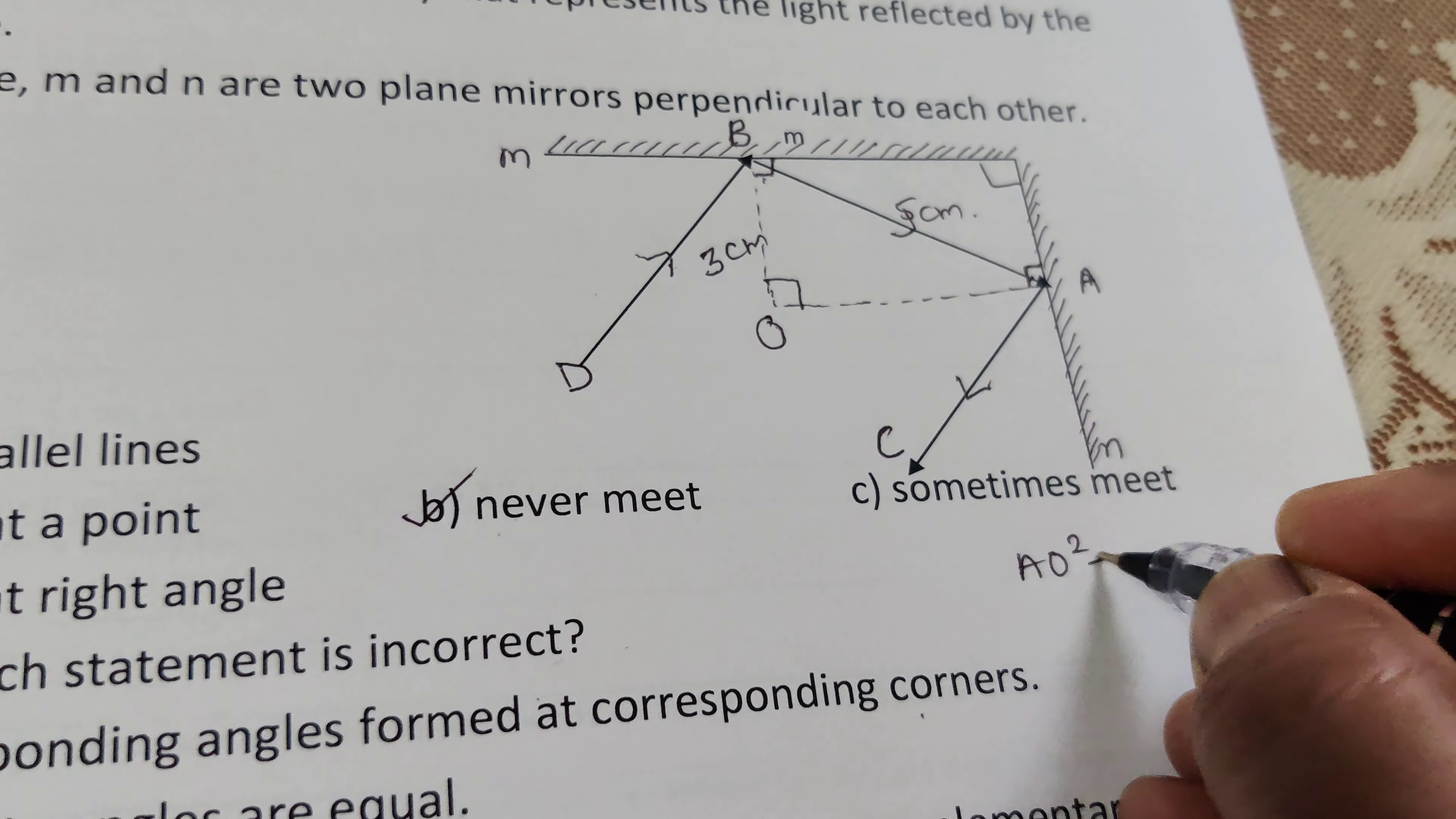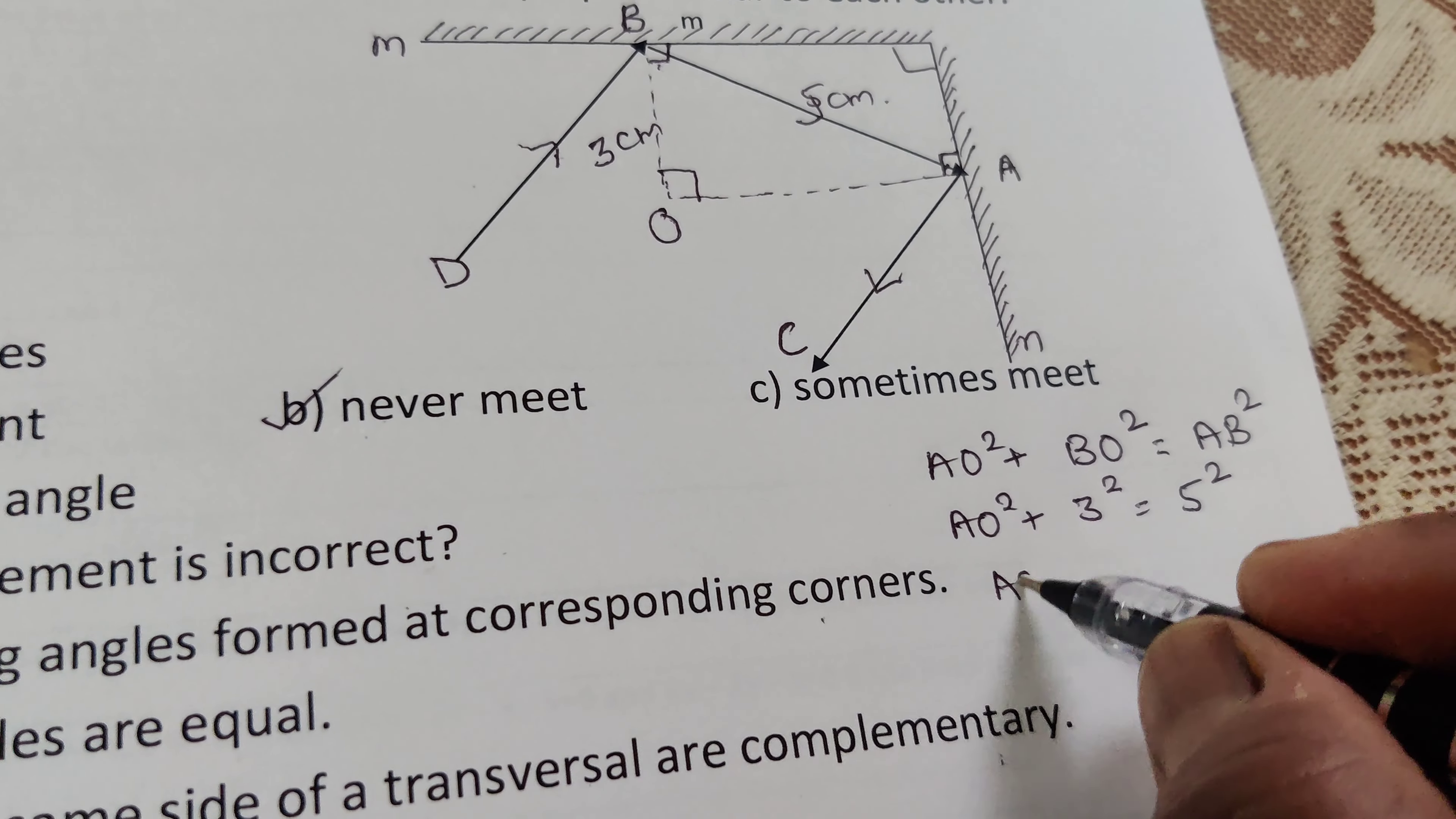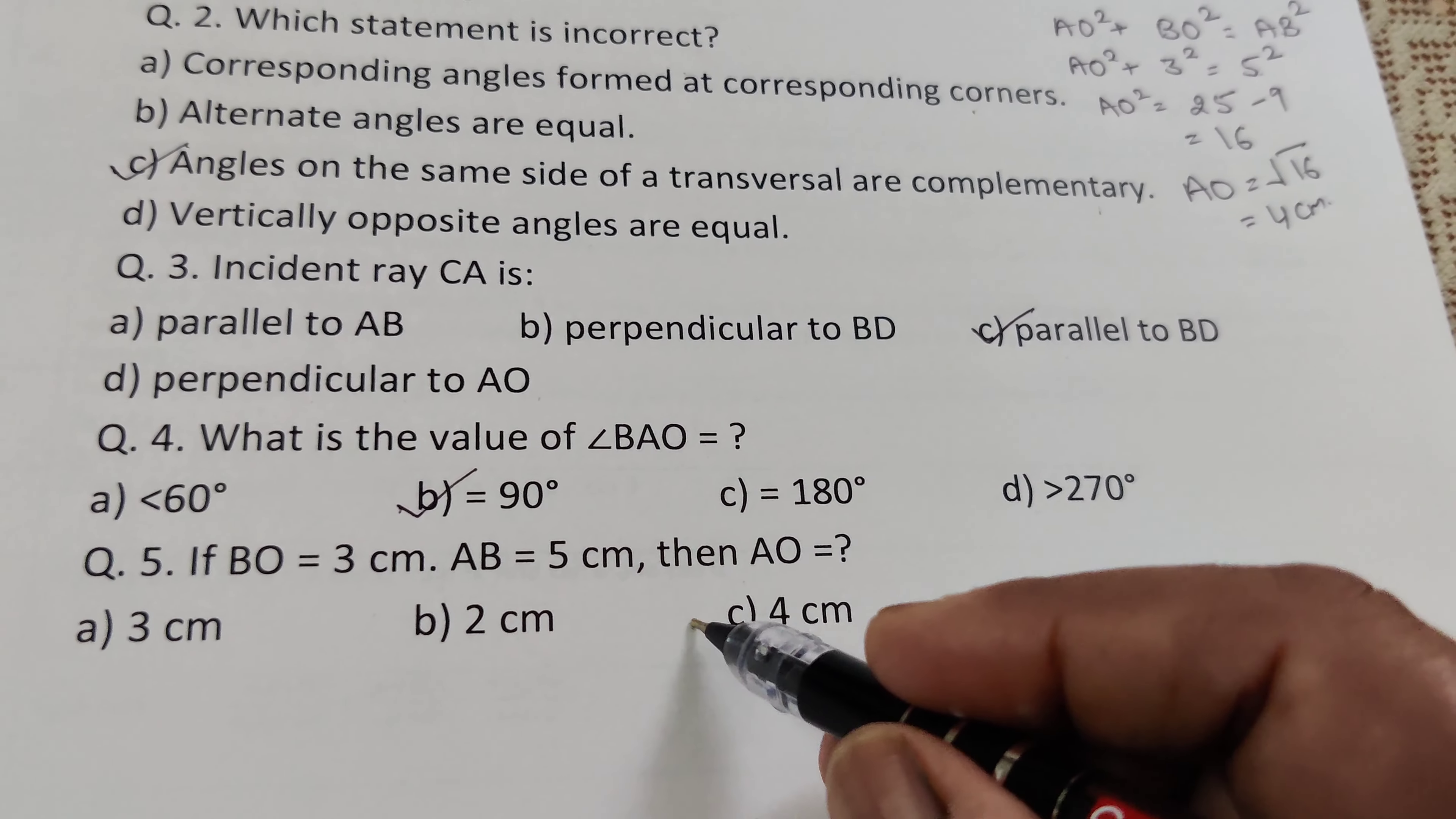AO squared plus BO squared - sum of 2 squares - equals the square of the hypotenuse. This is the Pythagoras theorem. AO squared, we have to find, BO squared means square of 3, equals square of 5. AO squared equals 5 squared is 25, 3 squared is 9, which equals 16. Then AO equals square root of 16, which equals 4 centimeters. AO equals 4 centimeters. The right option is C.